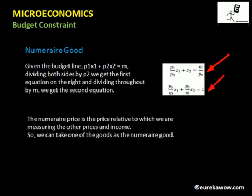If we fix the price of one good to be 1 and calculate the price of the other good and income relative to it, we incorporate the concept of a numeraire good. Here good two is the numeraire good, and its price fixed at 1 is the numeraire price. The numeraire price is the price relative to which we measure all other prices and income. So the price of good one is p1/p2 and the income is m/p2, both expressed relative to the numeraire good.